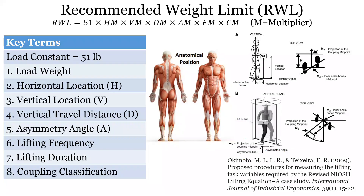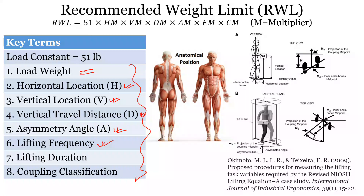Research found that when someone is lifting, an ergonomic issue can be created by eight different things. You may be lifting too much load, the load may be too far from the body, it may be too close to the floor, you may be lifting over a large vertical travel distance, you may be twisting your back, and there's also the frequency and duration of the task, plus how easy or difficult it is to hold the object.